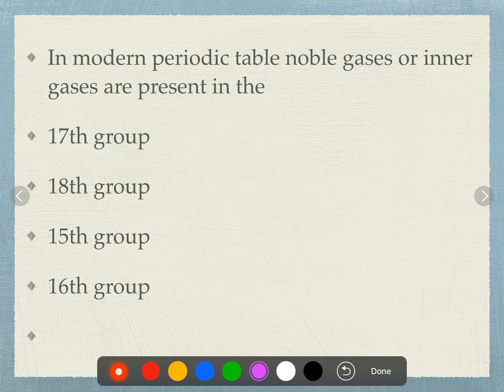In the modern periodic table, noble gases or inert gases — which group are they in? Options: 17th group, 18th group, 15th group, 16th group. Noble gases belong to the 18th group.